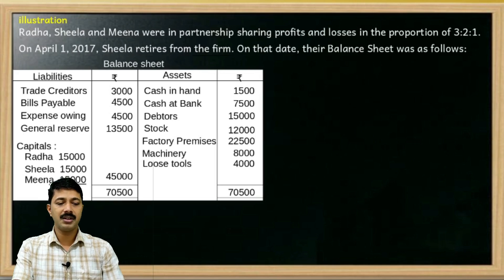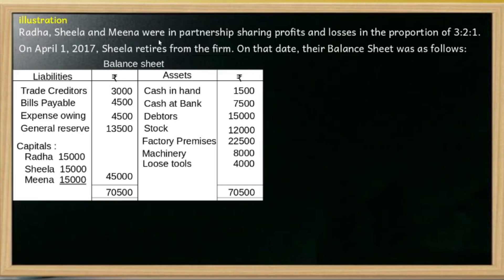The question is: Ryada, Sheila and Mina were in partnership, sharing profits and losses in the proportion of 3 to 2 to 1. On April 1st, 2017, Sheila retires from the firm. On that day, their balance sheet was as follows. Three partners: Ryada, Sheila and Mina. Profit Sharing Ratio is 3 to 2 to 1.